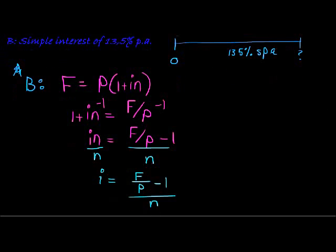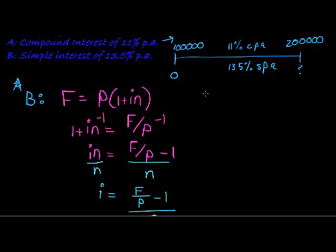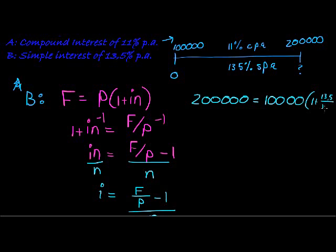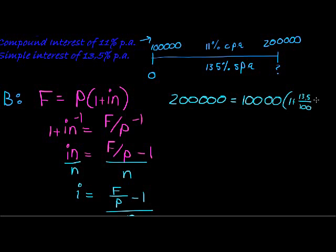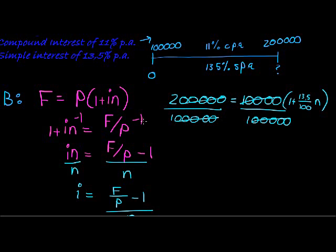Another way we could have done it is just to have used our values from the beginning. So let's go substitute all of our values. Our future value is 200,000 is equal to my present value is 100,000, times 1 plus my interest is now 13.5 over 100, times N is unknown. Just to show you, I could have used my substitution first. So now I can divide both sides with 100,000. This side divide by 100,000. And here we see the zeros cancel. 100,000 goes into 200,000 twice.